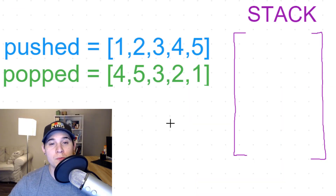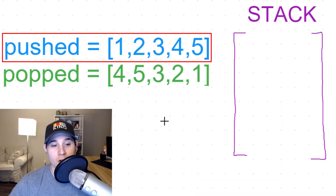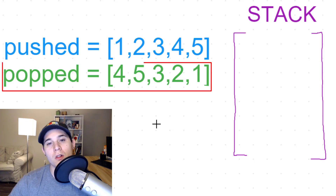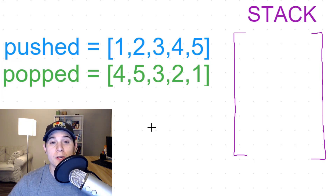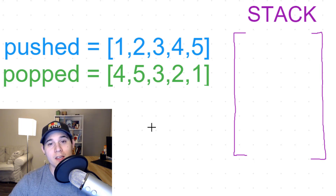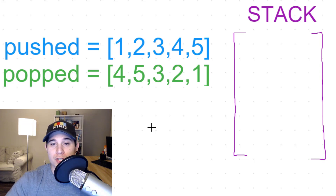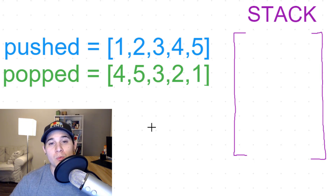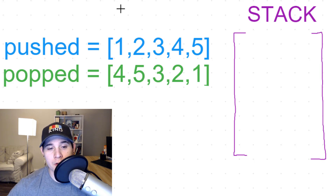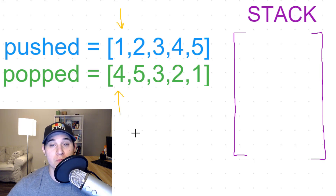All this problem is asking us to do is push all of the elements in our pushed array and pop all of the elements in our popped array, but in a specific order. When we've pushed and popped all of the elements, our stack should be empty. To solve this, we need two pointers — one looking at the start of pushed and one looking at the start of popped.